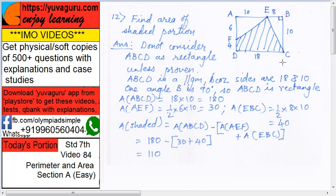EBC again, half into 8 into 10, right? Half base height. So 40.